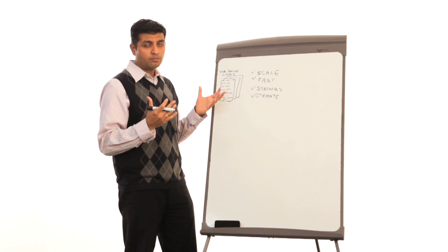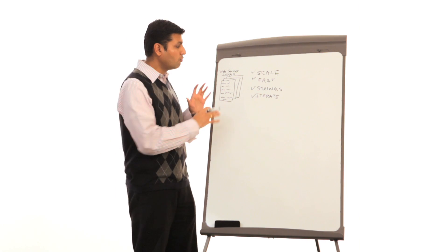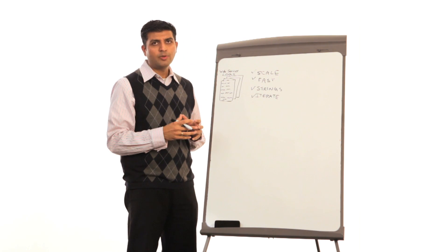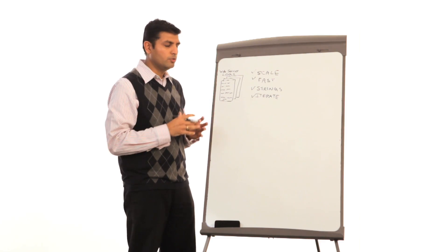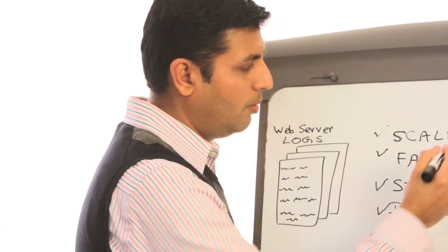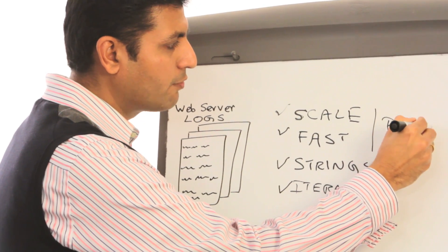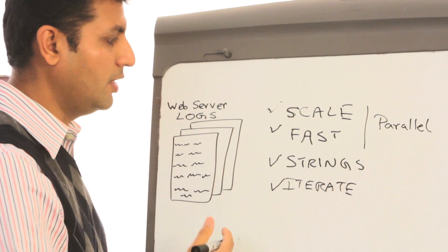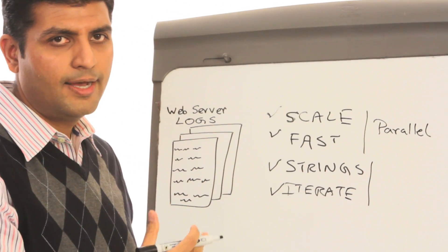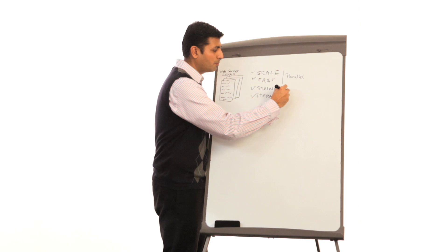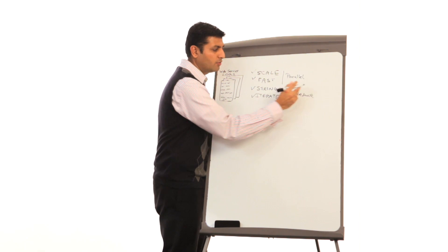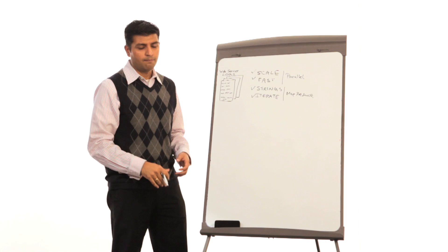The most commonly used techniques are either loading data directly into Netezza or using an intermediary — I'll show you both. To address scale and speed, a parallel data warehouse or parallel infrastructure helps, and that's what Netezza brings to the table. For string processing and iteration, you need a procedural paradigm; something like MapReduce is very relevant, and that's something we support inherently in Netezza.